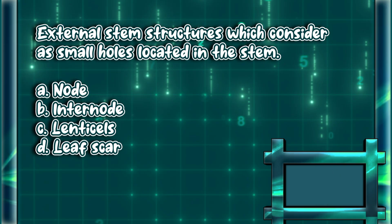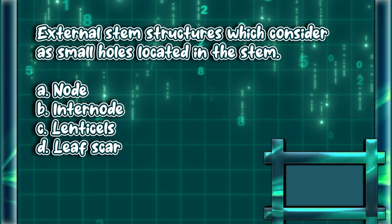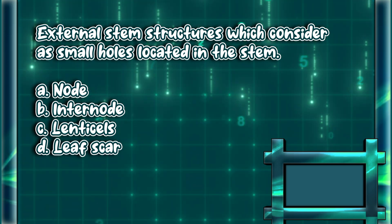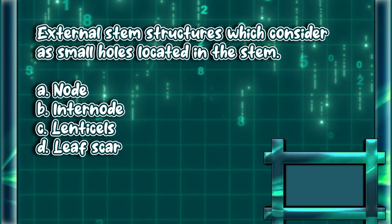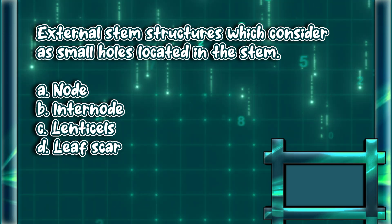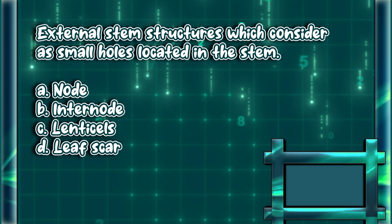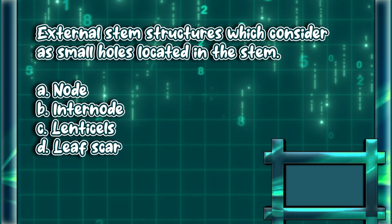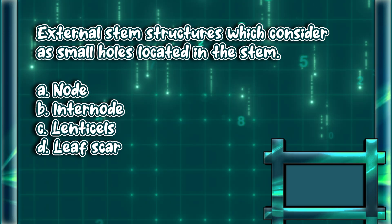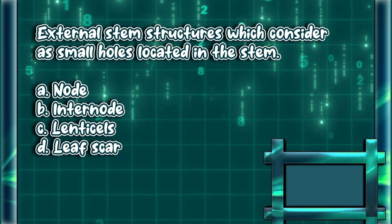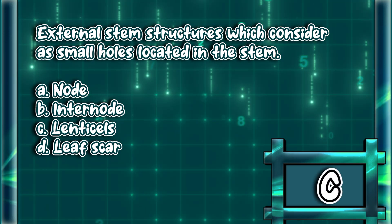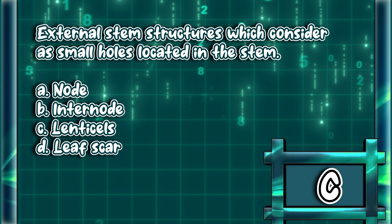External stem structures which are considered as small holes located in the stem. A. Node. B. Internode. C. Lenticels. D. Leaf scar. The answer is letter C.